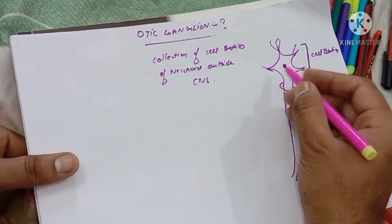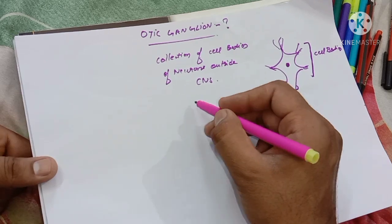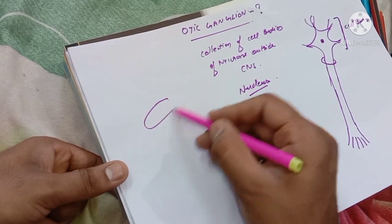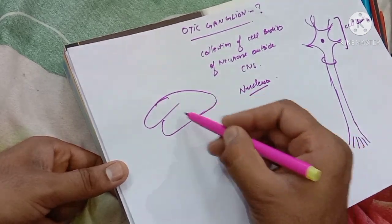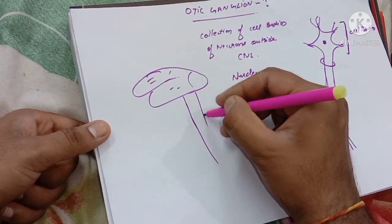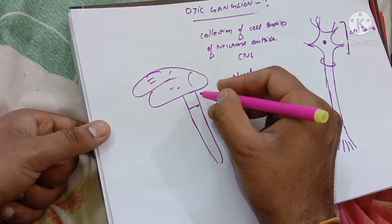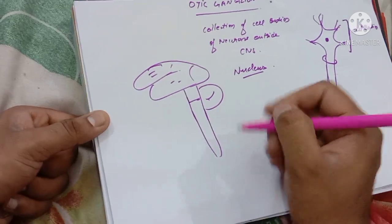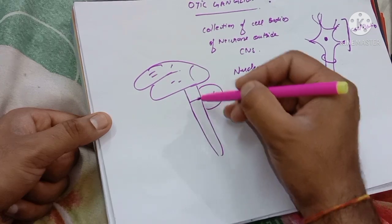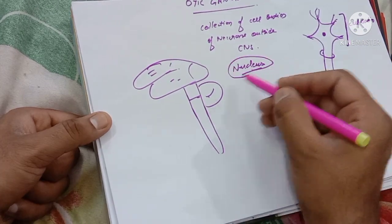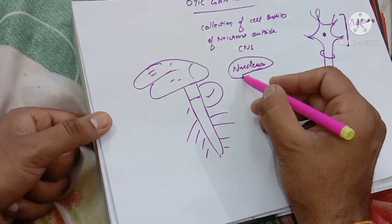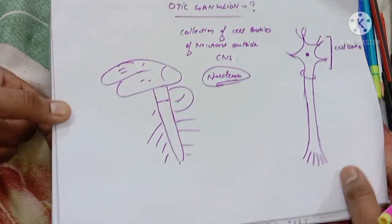Now, what if these cell bodies are present within the central nervous system? That is called a nucleus. The central nervous system implies the brain, the brain stem, as well as the spinal cord. The collection of cell bodies of neurons within the CNS is called a nucleus; when present in the peripheral nervous system, that is outside the CNS, it is called a ganglion.